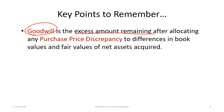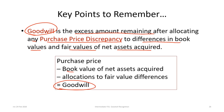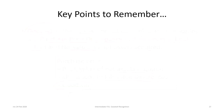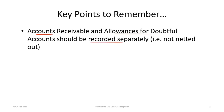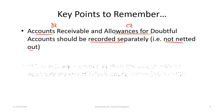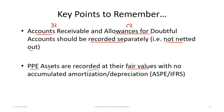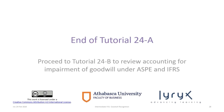Key points to remember: Goodwill is the excess amount remaining after allocating any purchase price discrepancy to differences in book values and fair values of net assets acquired. We determine goodwill by taking the purchase price, subtracting book value of net assets acquired, and subtracting allocations to fair value differences. Accounts receivable and allowances for doubtful accounts should be recorded separately, not netted. PPE assets are recorded at fair value with no accumulated depreciation — those fair values become the new depreciable cost. This concludes tutorial 24a; proceed to tutorial 24b for accounting for impairment of goodwill under ASPE and IFRS.